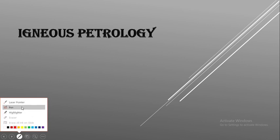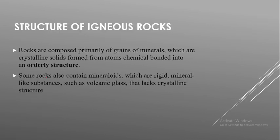The structure of igneous rocks: as we know, each and every rock composition has a different structure. Some may be rounded, some square, some hexagonal, some irregular. Some are boulders, some cobble shapes. Different rocks have different structures, so we need to think about why this happens — what might be the reason for the shape of the rock. That is the structure of igneous rocks.